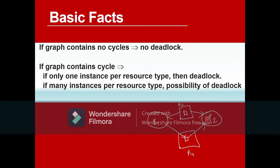For example, this graph has a cycle — P1 is holding R2 and requesting R1, but the R1 instance is already with P2. P2 is holding R1 and requesting R2. P1 is not ready to release R2 and wants R1; P2 is not ready to release R1 and wants R2. Both are waiting for resources held by each other. There is a cycle, and since there is only one instance of each resource, it is 100% a deadlock.